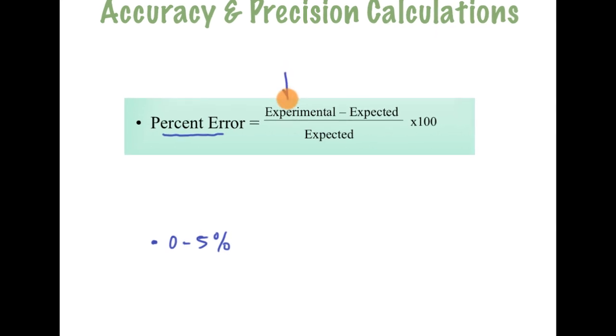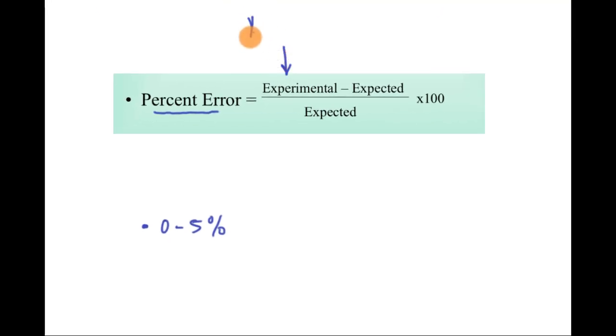The experimental is your measurement, so that's the measurement that you're going to make in the laboratory. That comes from your data. The expected is going to come from some sort of resource or table—you're going to look it up on the internet or in your book. That is the expected quantity.